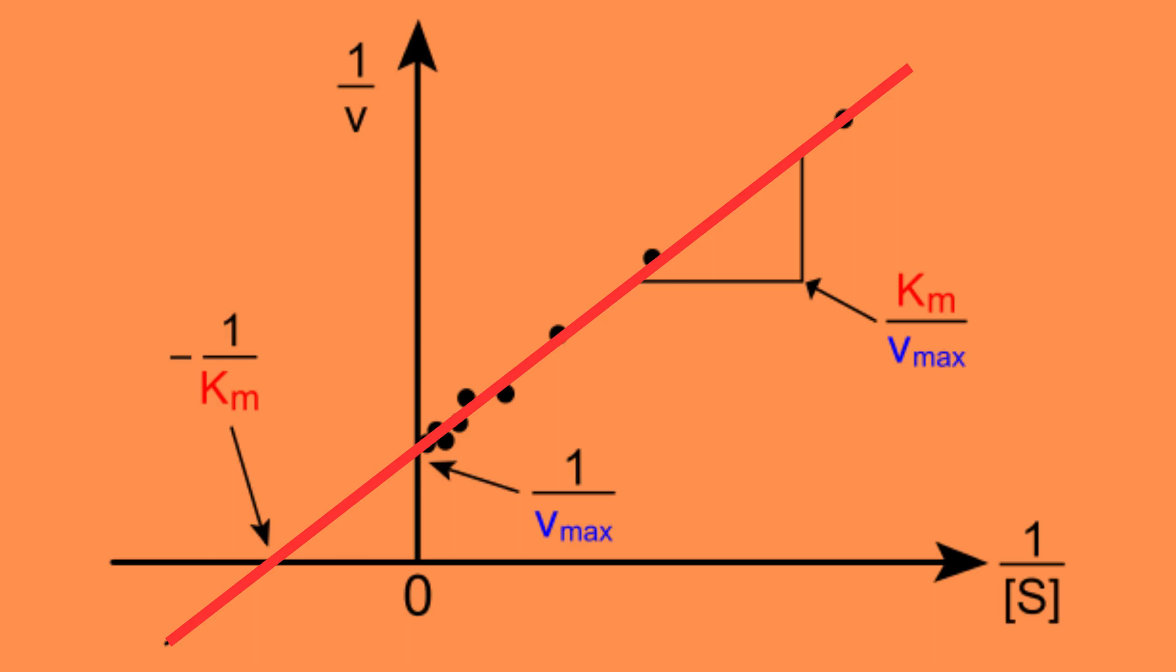By moving this same extra line upwards while it still remains parallel with the original line, we get the Lineweaver-Burk plot for uncompetitive inhibition.